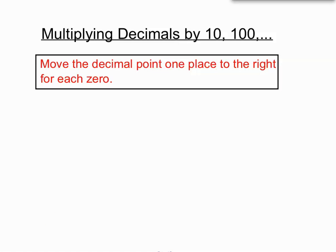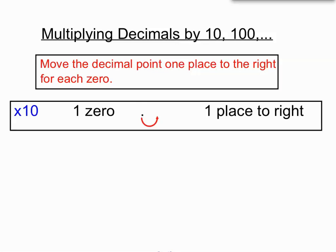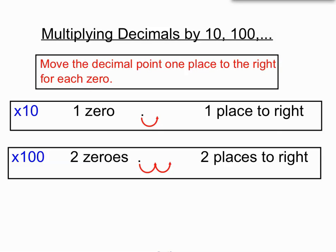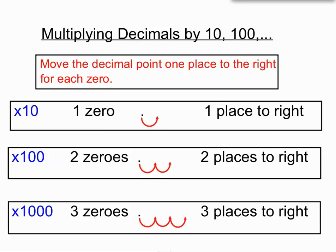Let's summarize. We move the decimal point one place to the right for each zero. If we're multiplying by 10, that moves the decimal point one place to the right. If we're multiplying by 100, two places to the right. Multiplying by a thousand, three places to the right. So if we look at the zeros and move the decimal point one for every zero, we should be good.